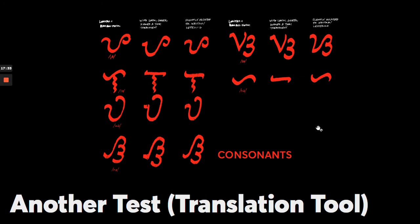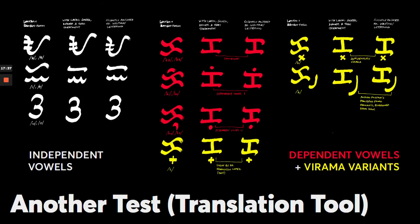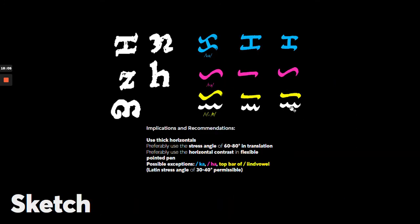We also have ways to express independent vowels, dependent vowels, and viramas. There are actually three options: the Cruz Kudlit, the Equis, and the Pamudpud. What I found in the experiment was that thick horizontals are recommended, but there are exceptions — the Ka, Ha, and the top bar of E independent vowel. In those cases, you can use the Latin contrast or simply follow the 60 to 80 degree contrast.